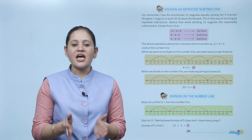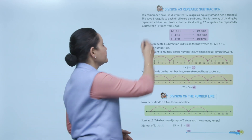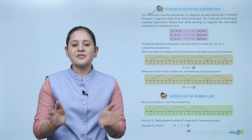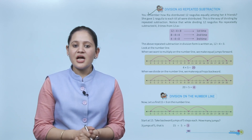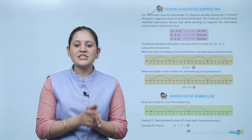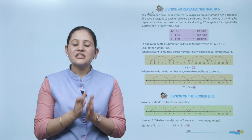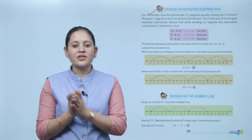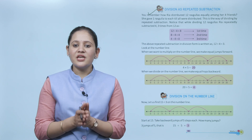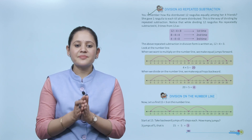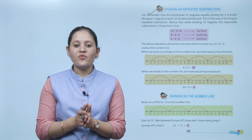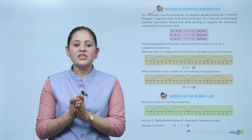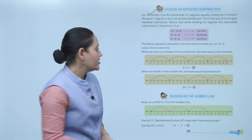Division as repeated subtraction: division is the same as repeated subtraction. Remember how Rhea distributed 12 rasgullahs equally among four friends — she gave one to each till all were distributed. While dividing 12 rasgullahs, Rhea repeatedly subtracted four, three times from 12.